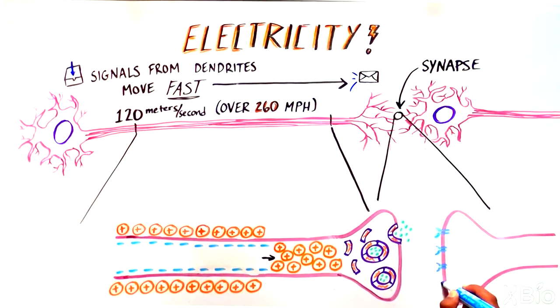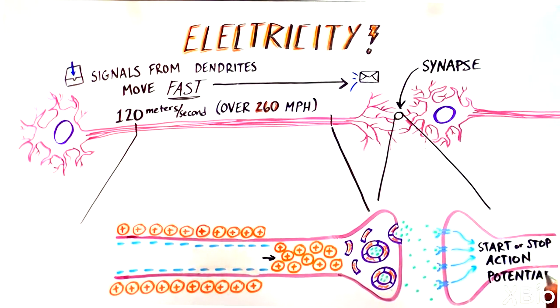Here, the neurotransmitters are detected by membrane proteins on the receiving cell, which initiates a specific action, the generation or cessation of an action potential.